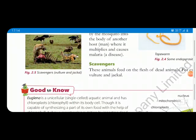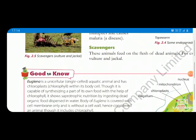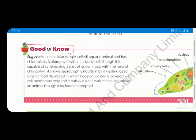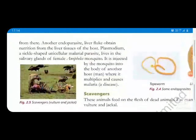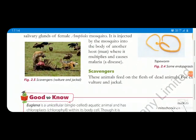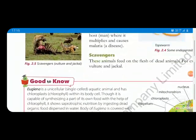The next category is scavengers. Scavengers are animals that feed on the flesh of dead animals — like vulture and jackal. For exam questions, you should be able to define each category and give two examples: scavengers — vulture and jackal; saprophytes — fungi, bacteria, earthworm; parasites — ectoparasites and endoparasites.